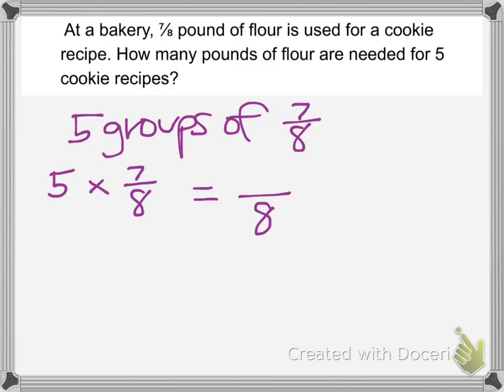My seven in my numerator is getting multiplied by the five groups, the five groups of cookie recipes. So seven times five is thirty-five. And so I could say that I need thirty-five-eighths pounds of flour.